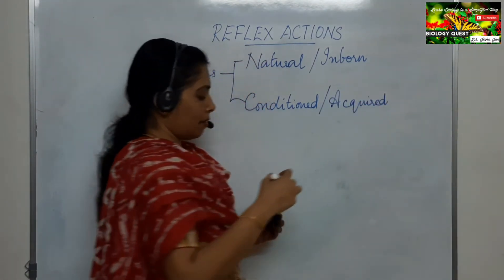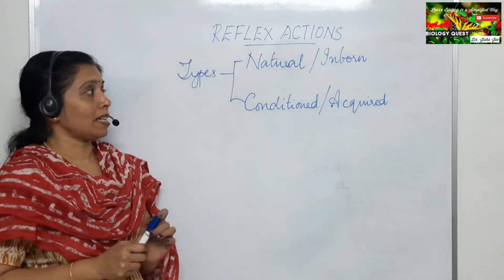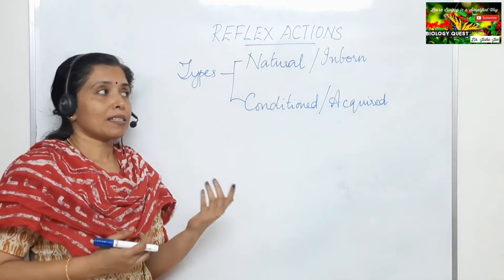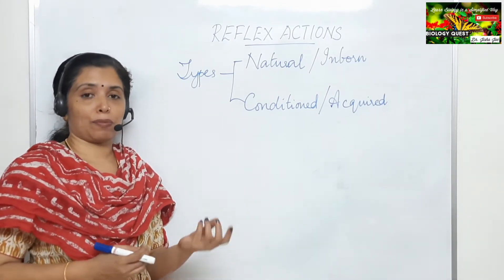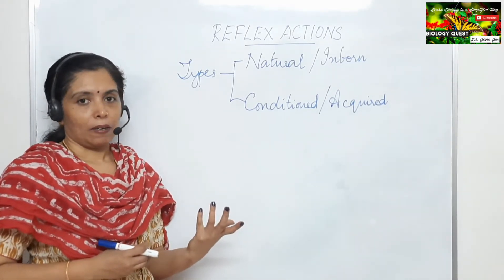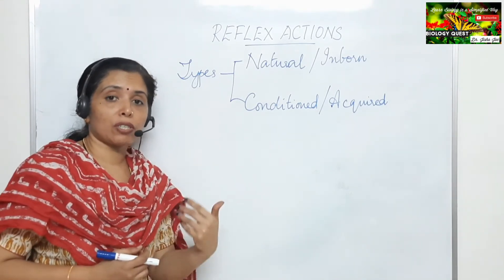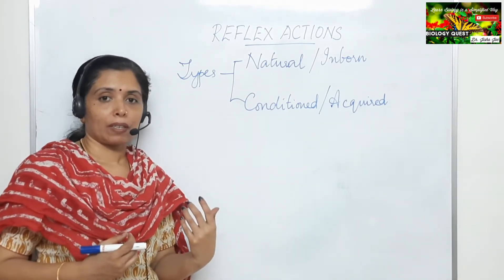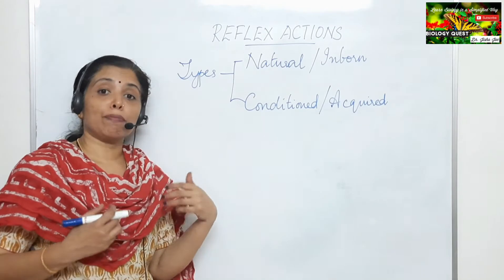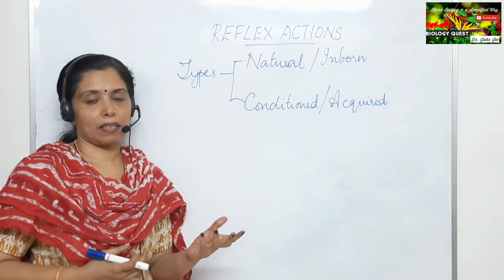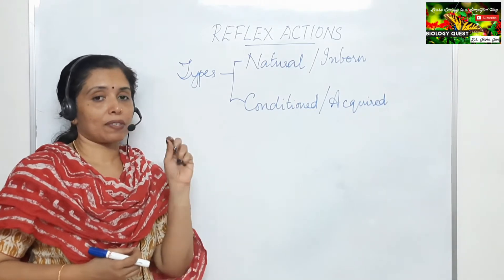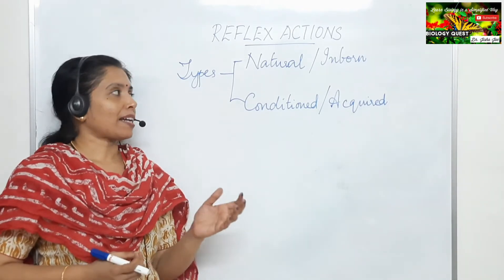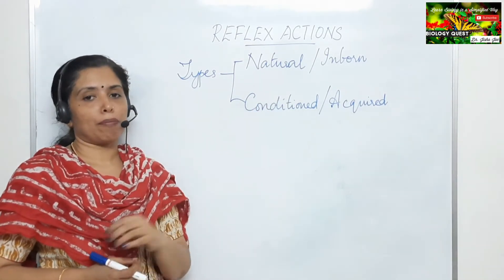Natural reflexes are inborn — they are not learned through previous experiences. For example, the flushing of tears from the eye when something falls into it: nobody teaches us this when we are young. Such reflex actions, where previous learning experience is not required, are called natural or inborn reflexes.